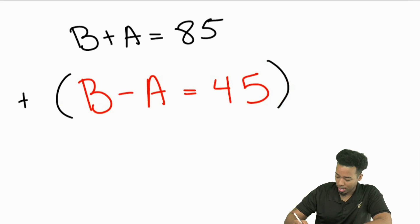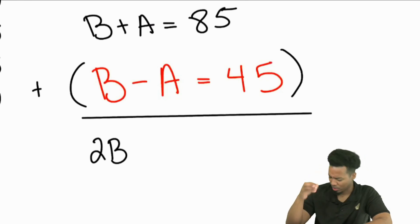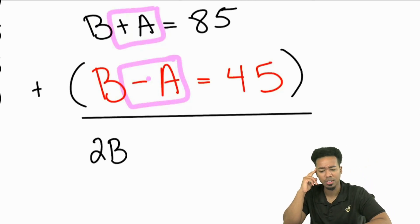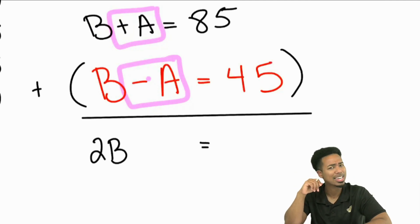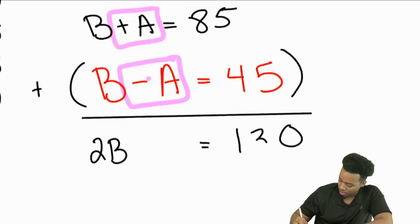If we add these equations together, we're going to get B plus B. What's B plus B going to be? We're going to get 2B. And what happens when we do A plus negative A? Those are going to cancel out. And then 85 plus 45 - 5 plus 5 is 10, then 8 plus 4 is 12, carry the 1 is 13. That gives us 130.